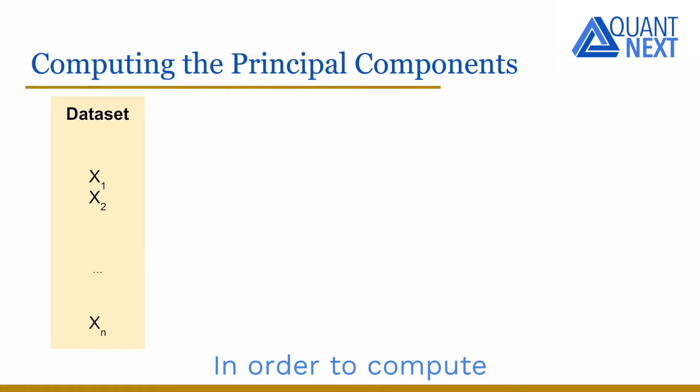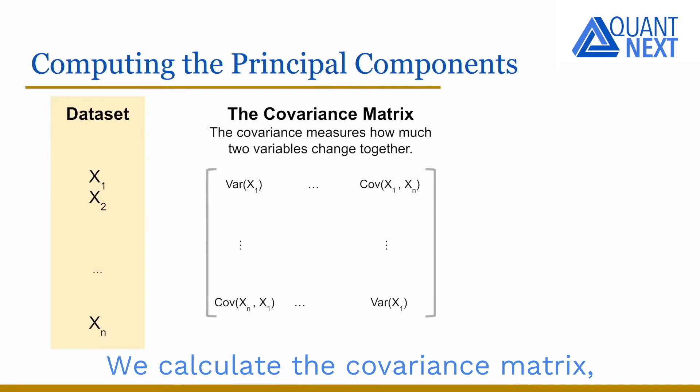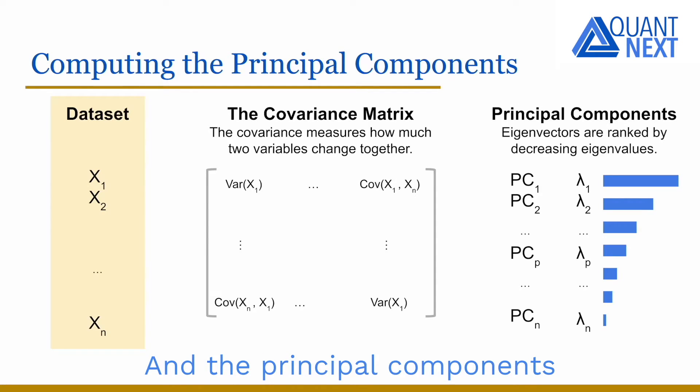In order to compute the principal components, we start with a dataset. We calculate the covariance matrix, which measures how much two variables change together in our dataset. And the principal components are new, uncorrelated variables, linear combinations of the initial variables, which maximize the total variance explained. It can be shown that the first principal axes are the eigenvectors of the covariance matrix with the highest eigenvalues.